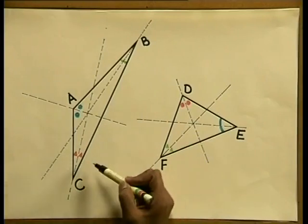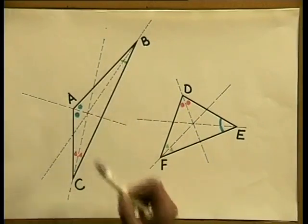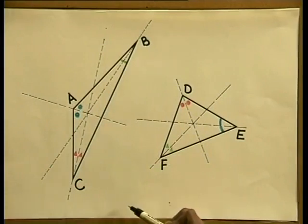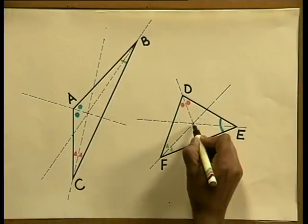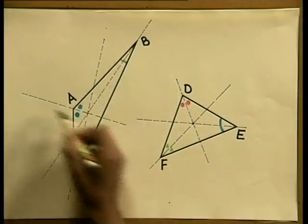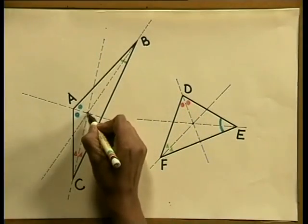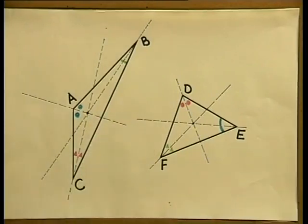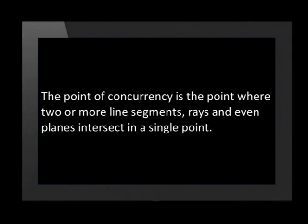I have constructed the angle bisectors in triangles ABC as well as DEF. I have marked the equal parts with the same symbols. Notice that these lines all pass through one point in each triangle. This point has a specific name: the point of concurrency — the point where two or more line segments or planes intersect in a single point.